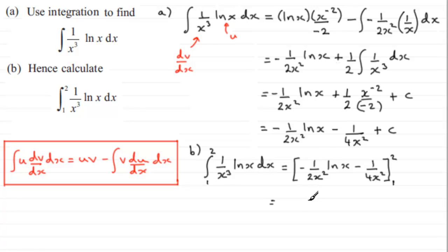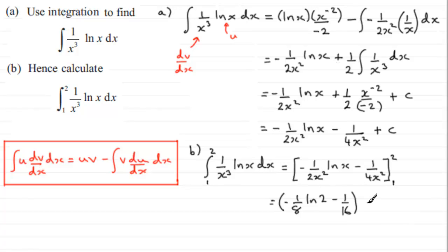Substituting x equals 2 first: minus 1 over (2 times 2 squared) — that's 2 times 4 which is 8 — so minus 1/8 times the natural log of 2, then minus 1 over (4 times 4), which is minus 1/16. Substituting x equals 1: the natural log of 1 is 0, so that first term vanishes, and we get minus 1 over 4 times 1 squared, which is minus a quarter.